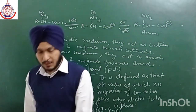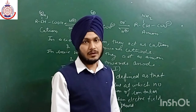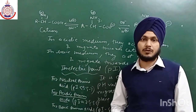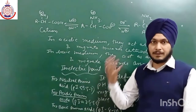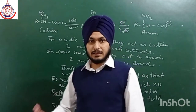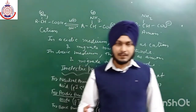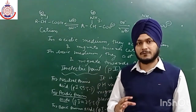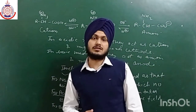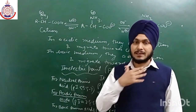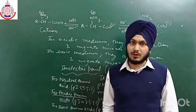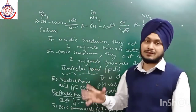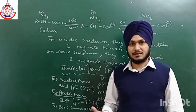This is all about the alpha amino acids, the monomer of protein. In the next class, we will discuss protein formation — firstly peptides, then polypeptides, and then the structures of proteins: primary, secondary, tertiary, and quaternary. I hope you found this lecture helpful. Thank you for watching.